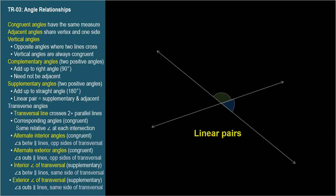When two lines cross, linear pairs are the angles on one side of either line. They're always supplementary, adding up to a straight angle, and of course, they're adjacent.